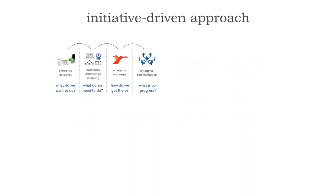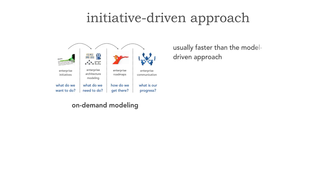If we analyze the initiative-driven approach, I like to call this on-demand modeling. From a modeling standpoint, we don't do anything with modeling the enterprise until we actually have to do something. Because of that, this is usually a faster approach than the model-driven approach, because we don't spend so much time modeling. If the initiative is scoped just to a particular department, division, or set of systems, that's the only thing we model.